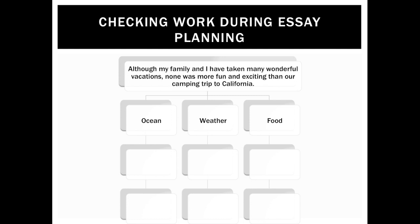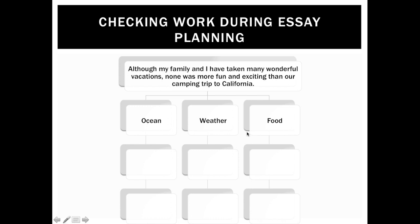So I'm going to change my thesis statement. Instead of the Grand Canyon, I switched it to California. Now I have three things I actually enjoyed about California — those are going to be my three supporting ideas. I didn't have enough supporting ideas to support my thesis, so I had to change my thesis to something I could actually support with three different supporting ideas. These three supporting ideas become the topic sentences of my three body paragraphs in the five-paragraph essay.